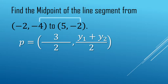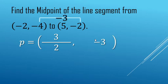...is negative 3. That's the middle of the y's. You don't need to use the formula, but you still can if you want to. Negative 4 plus negative 2 makes negative 6, divided by 2 still gets negative 3.